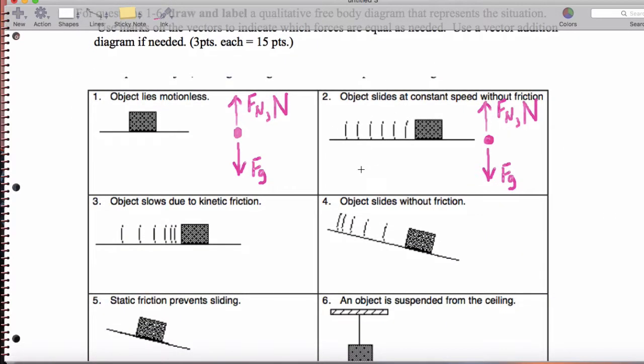Now, when we slow due to kinetic friction, it's a very similar free-body diagram. There is one thing that happens, though. So we have a similar free-body diagram. But now that we're slowing due to kinetic friction, we also have this friction force going backwards.